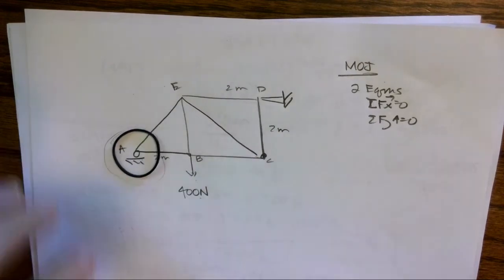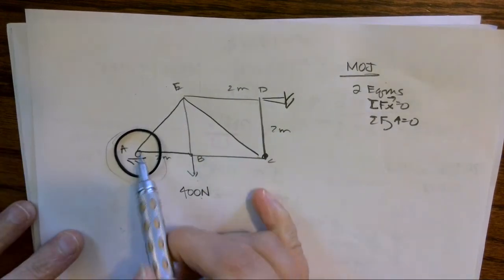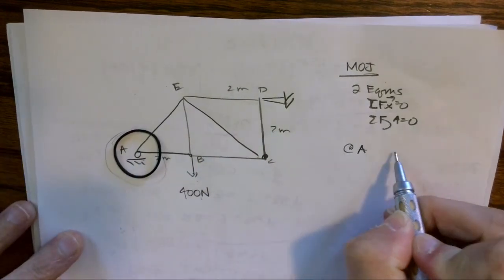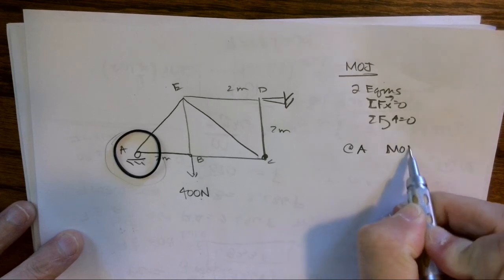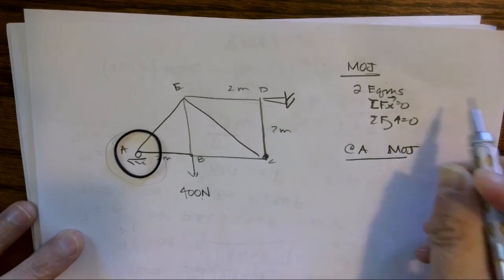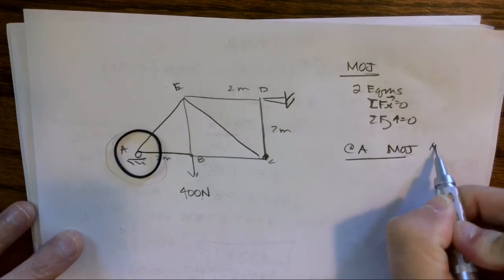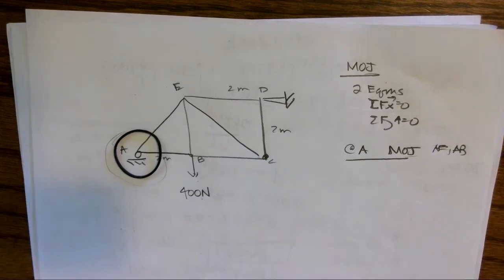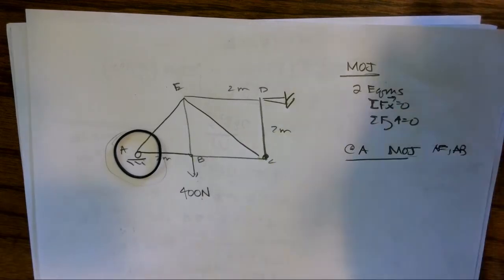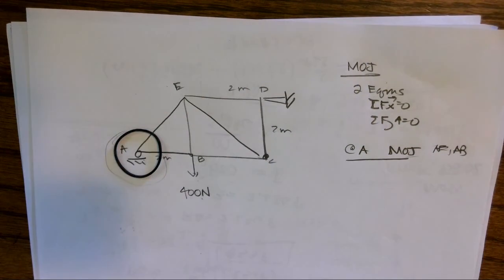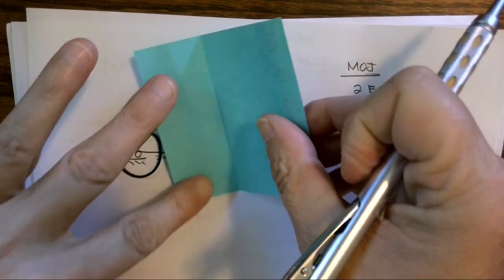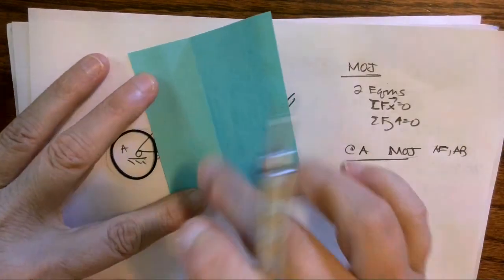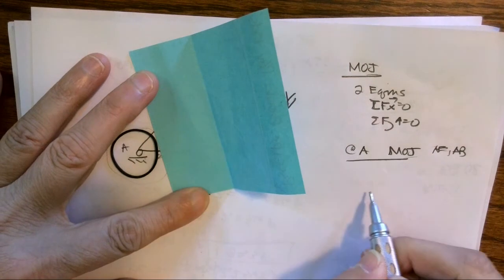So if you want to, maybe take like a small hair tie or a rubber band, and if I say at A, I want to use method of joints to find AE and AB, then I need to isolate that. So if I put a circle around it, then I can go back. I know I keep telling you guys to get post-it notes, but I'm just going to cover up everything else.